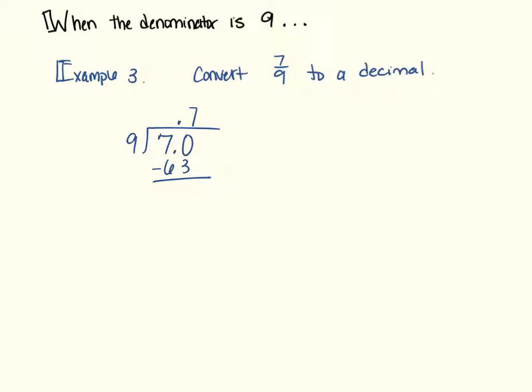Then we're going to add another 0, bring it down, 9 into 70, yet again. So, we're going to say 7 times, so now you're starting to see the repeat. So whatever number is on the numerator is going to be your repeat.